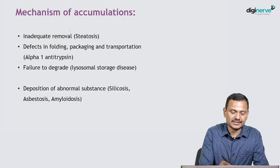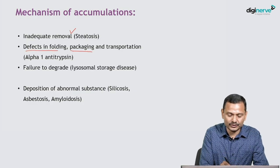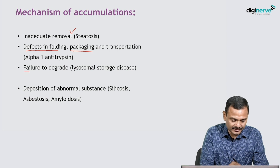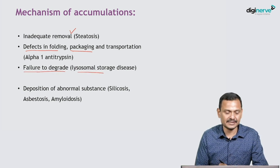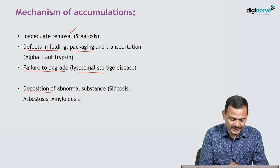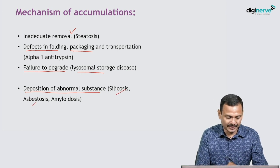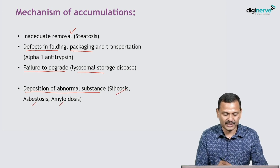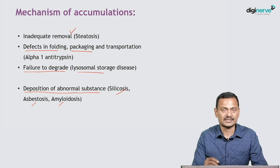To summarize, there are four mechanisms of accumulation: first, inadequate removal; second, defect in folding and packaging; third, failure to degrade, like lysosomal storage diseases; and fourth, deposition of abnormal substance like silica, asbestos, and amyloidosis.